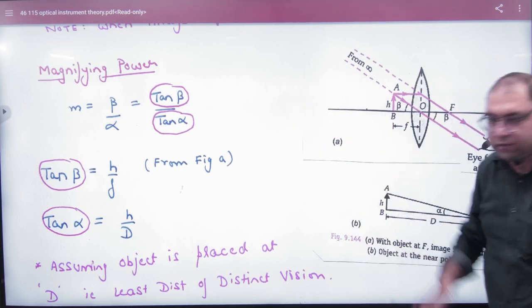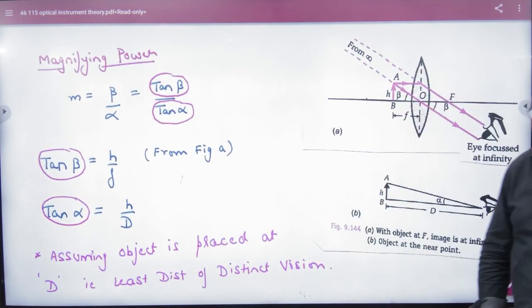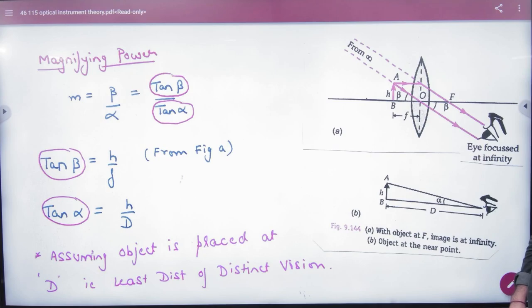So magnifying power formula. What will happen from tan beta here? H divided by F. Tan beta equals H by F. What will happen in tan alpha?